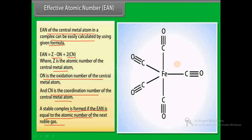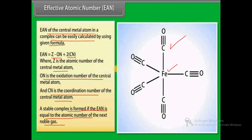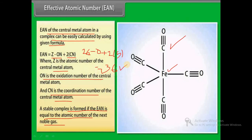For iron pentacarbonyl, Fe(CO)5, iron is surrounded by 5 carbonyl groups. The calculation is: EAN = 26 − 0 + (2 × 5) = 26 + 10 = 36, which is the atomic number of krypton, the next noble gas. So Fe(CO)5 effectively obeys the effective atomic number rule.